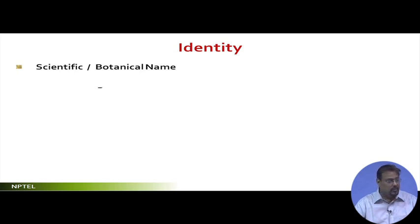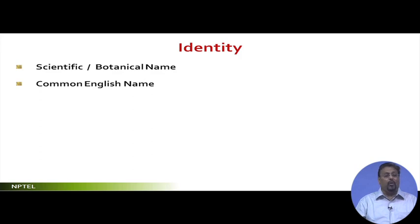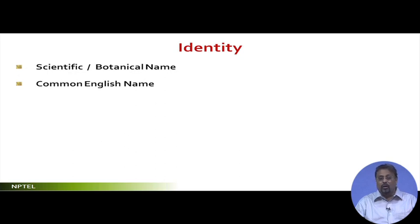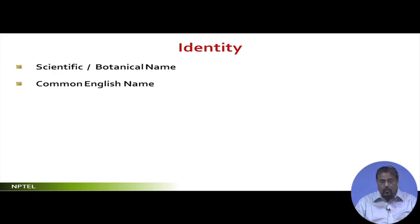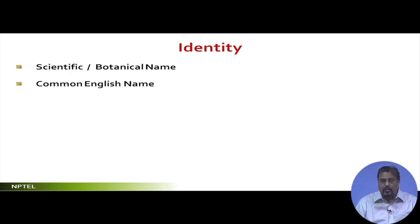Whenever identity is given, there are three ways: one is the scientific and botanical name, the next is the common English name. Since English is a common language all over the world and most people are communicating in this language, they try to see what name best represents the plant.